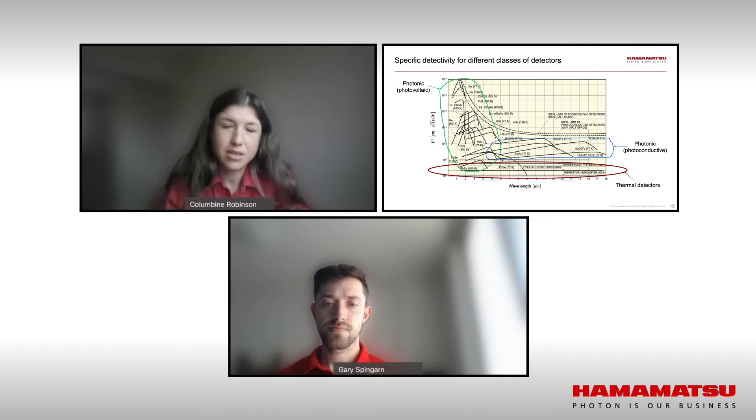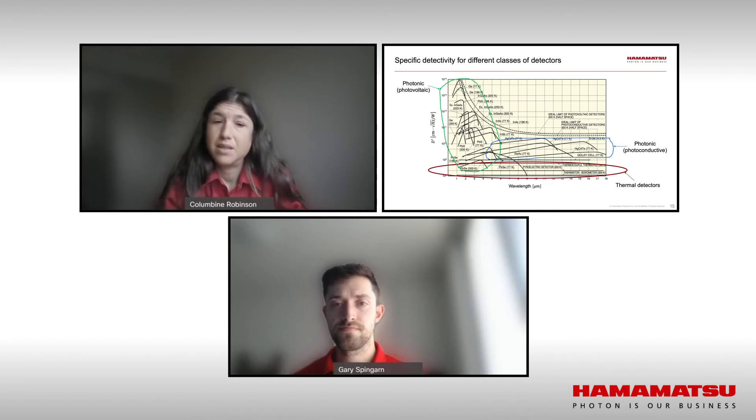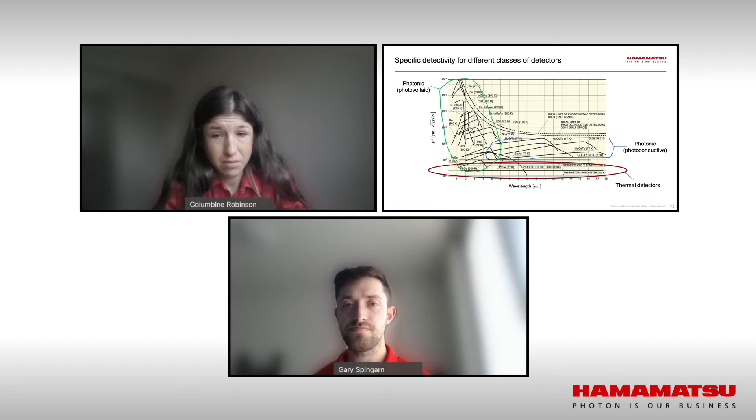One thing to note is that thermal detectors are cheaper. Now comparing photonic detectors: MCT generally have a higher d-star; however, we've seen a lot of unit-to-unit variability. If a customer is doing any kind of tool matching, this could lead to an overall hit in sensitivity. Additionally, they're quite expensive and therefore tend to have smaller active areas. Because of this, they are also no longer RoHS compliant.